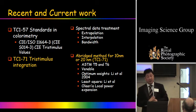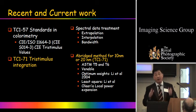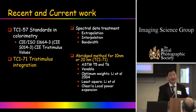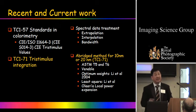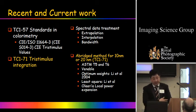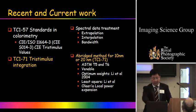The present CIE work — TC1-57 — is looking at how to calculate XYZ values correctly, to be published very soon. If you think everybody knows how to calculate XYZ values, look at the details: to get good agreement between different instruments you need to consider extrapolation, interpolation, and bandwidth. For example, if you have a 20 nm interval instrument, how can you get accurate XYZ values? This new standard addresses that.